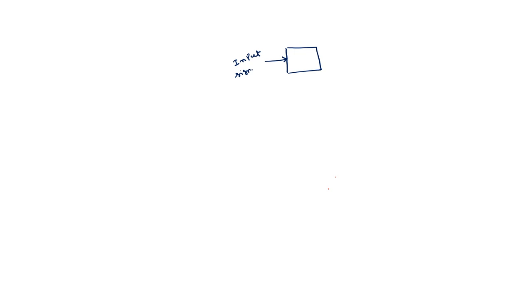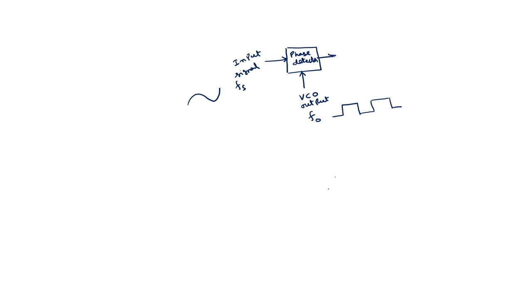Basically, a phase detector has two inputs: one is the input signal with a frequency and phase, and the second one is the VCO output with a frequency of F-naught. You see normally square or rectangular type of waveform; here this is sinusoidal or any other signal. This is the phase detector, which produces some error signal.